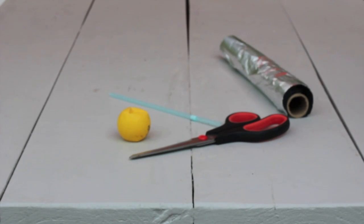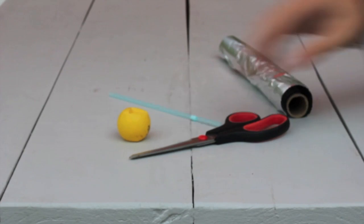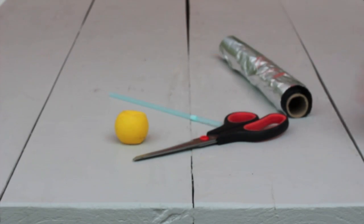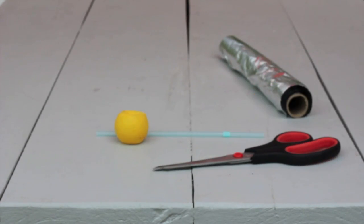Hello. In this tutorial, we're going to make a smoke bomb out of a ping pong ball, scissors, straw, and tin foil.